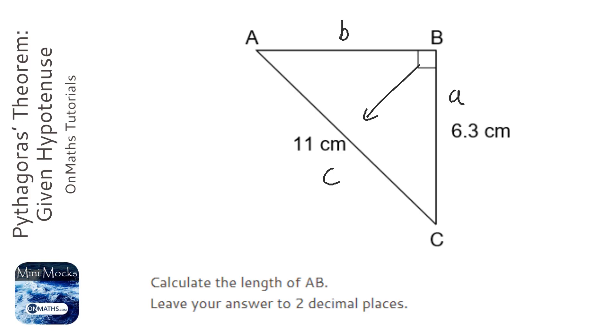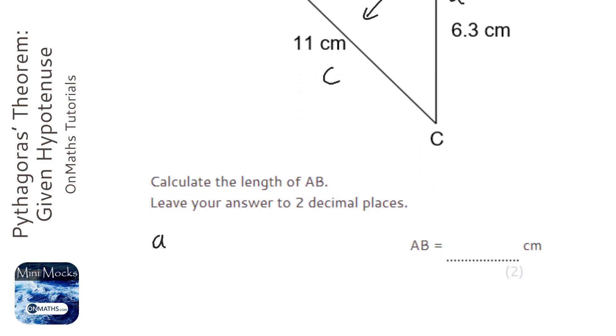I'll label this a and this b. The formula for Pythagoras is a squared plus b squared equals c squared. And we've got a squared which is 6.3, we've got a, don't have b, but we have c, so let's work that out.